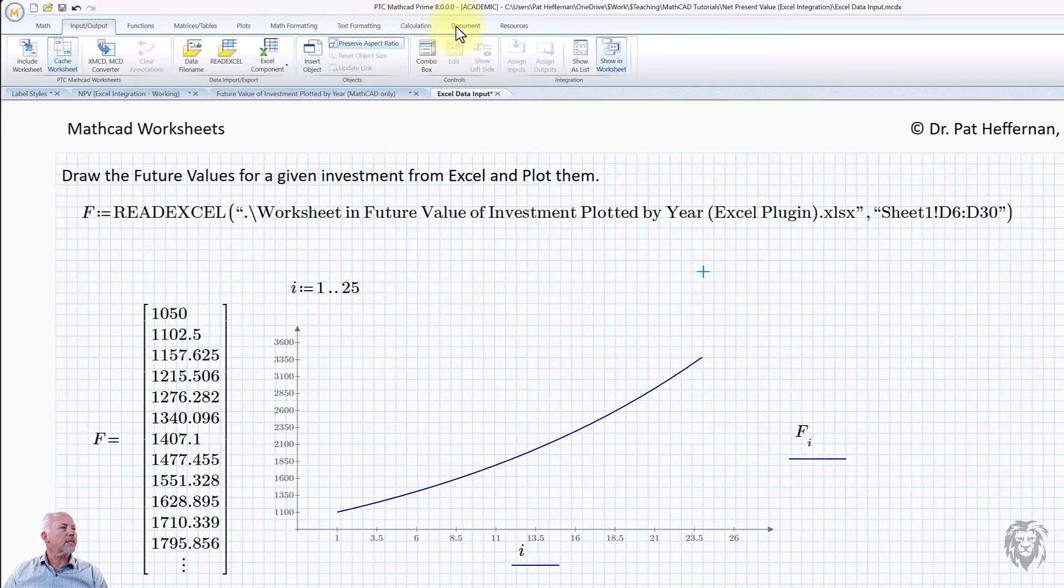It's actually not a function. That's in the labels, that's one of the system variables. Of course, we already had our plot set up to do that. We have F at I, we have a range variable for I, 1 to 25, and now we're seeing this plot of the data.